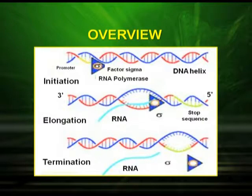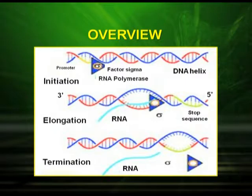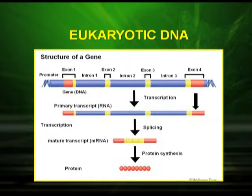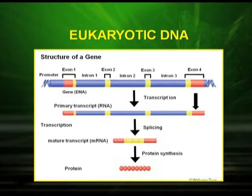To summarize transcription: initiation takes place with the help of the sigma factor, then elongation where RNA nucleotides are added, and termination where the Rho factor terminates the process. In eukaryotic DNA, the process is more complex than in prokaryotes, with intervening regions — exons and introns — making the process more complicated.